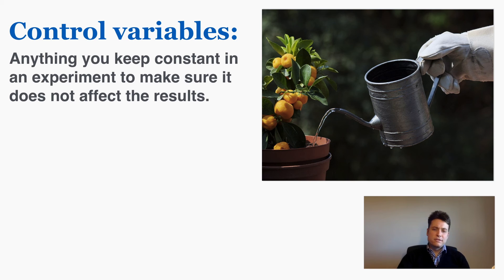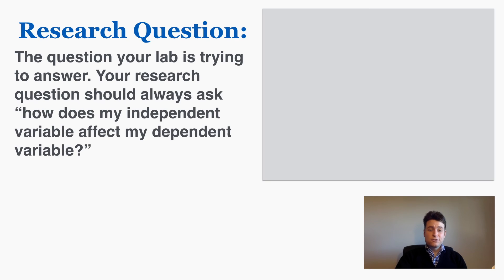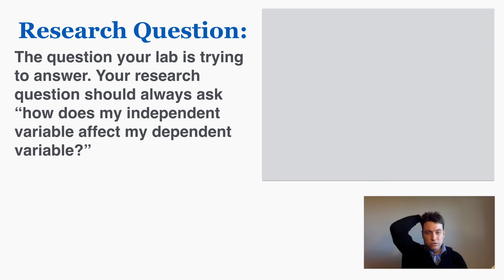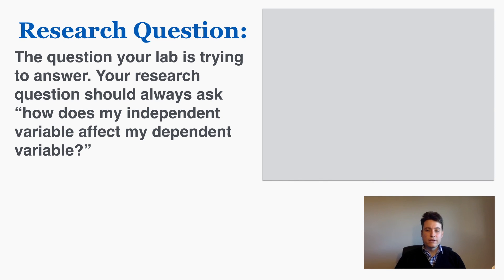The last thing you need to know is the research question in an experiment. The research question is the question your lab is trying to answer. Your research question should always ask: how does my independent variable affect my dependent variable? Every lab we do in physics has a point to it — there's always a single thing we're investigating. Without a research question, we'd just be playing with lab materials without specific information to guide our investigation. The research question helps us understand what that is.